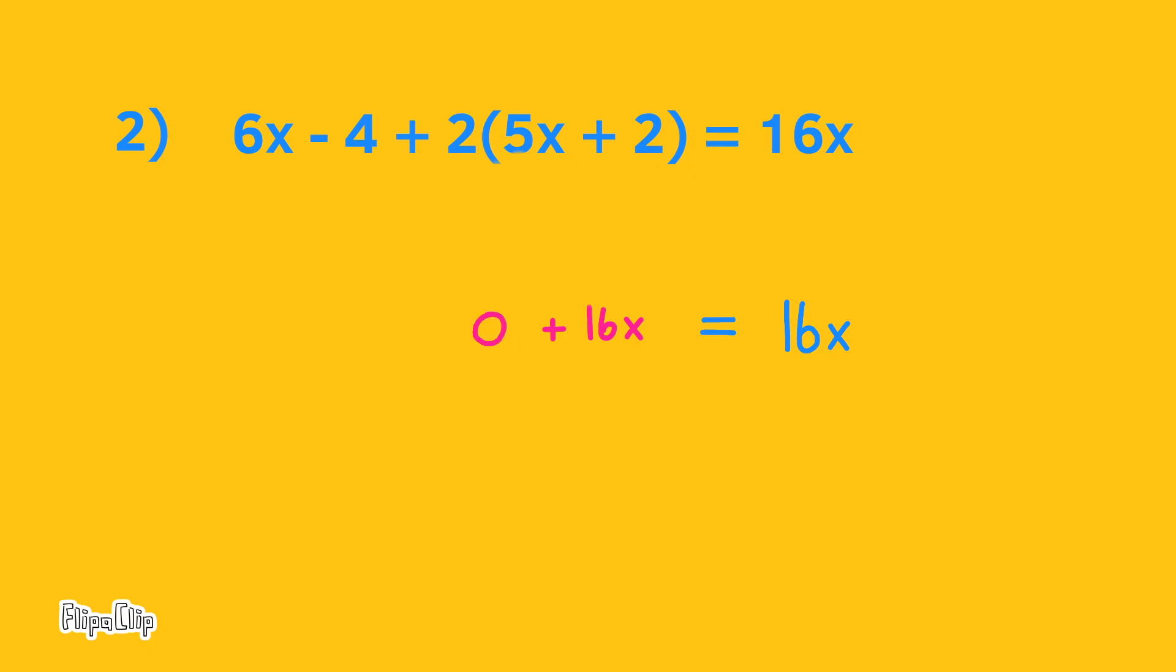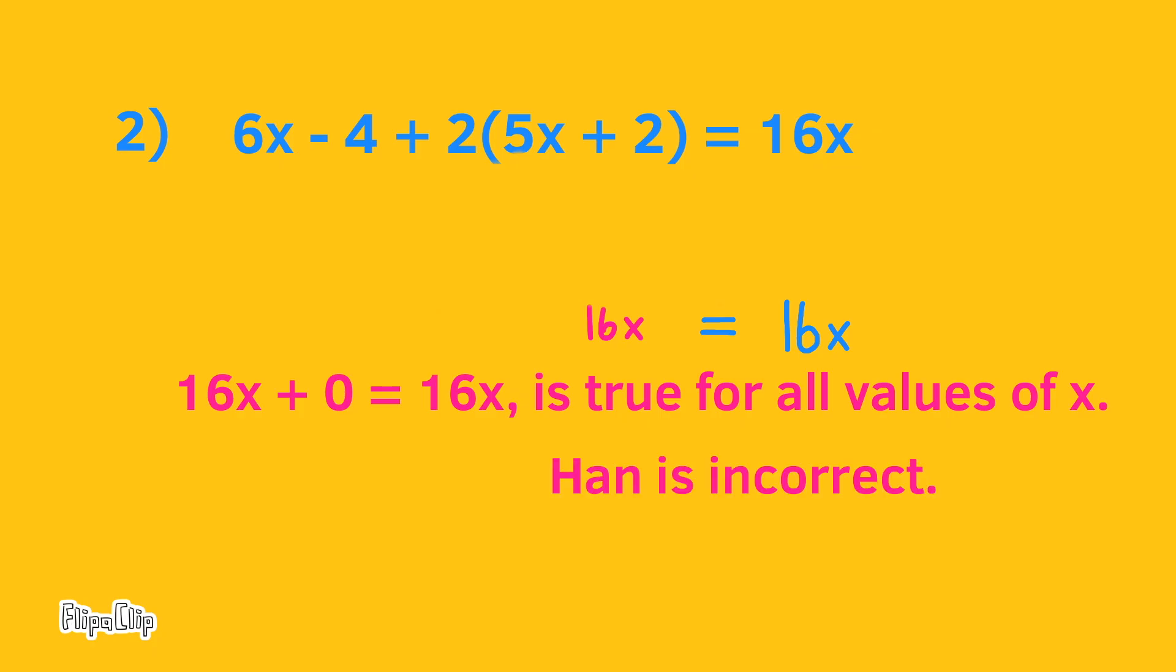If you perform all the operations, you'll figure out that Hahn is incorrect because 16x plus 0 equals 16x, and that's true for all values of x. Hahn is incorrect.